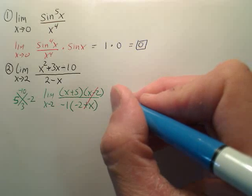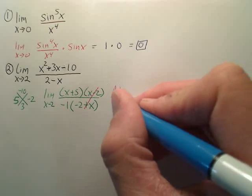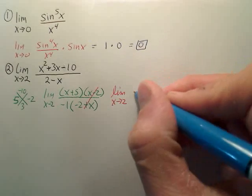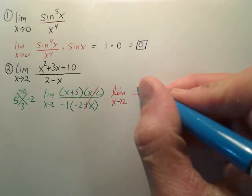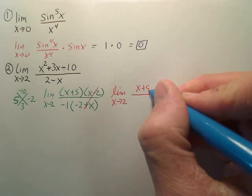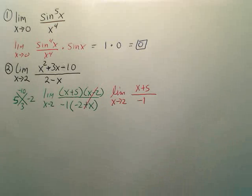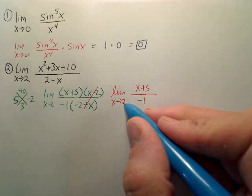So we now have the limit as x approaches 2 of x plus 5 over negative 1. And that you can now plug in 2.